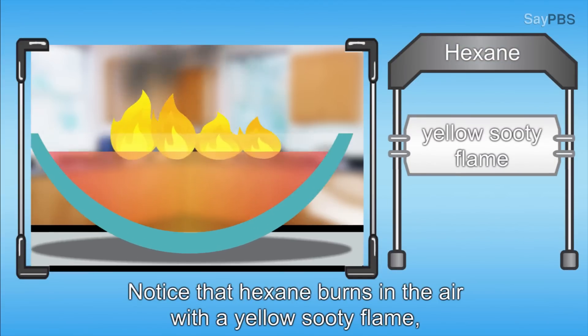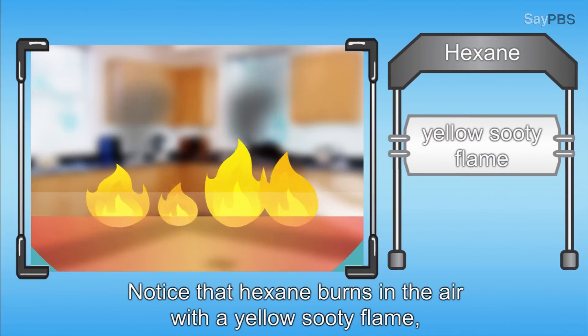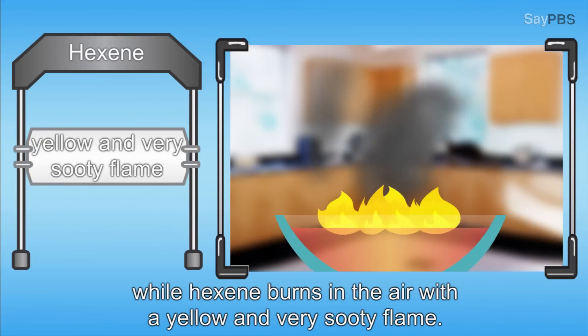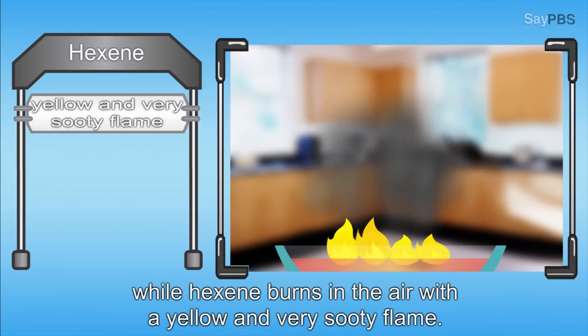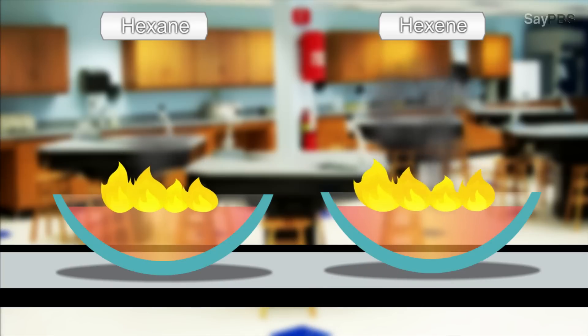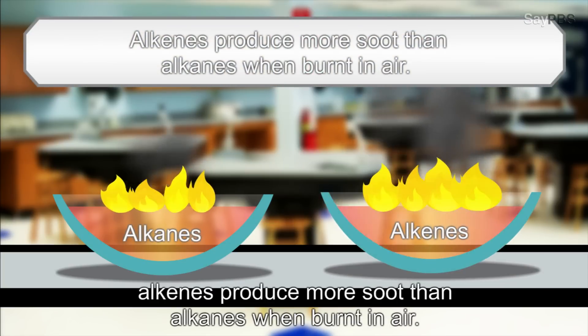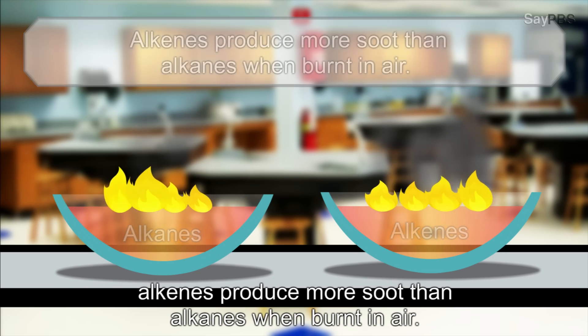Note that hexane burns in the air with a yellow sooty flame, while hexene burns in the air with a yellow and very sooty flame. Therefore, we can conclude that alkenes produce more soot than alkanes when burnt in air.